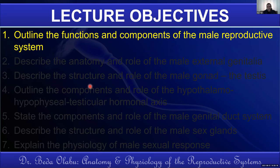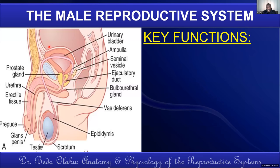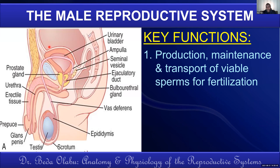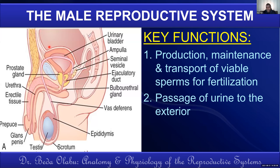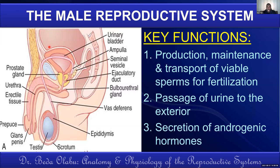Starting with the functions: if someone asks you to state the key functions of the male reproductive system, we talk about the production, maintenance, and transport of viable sperms for fertilization — that's basically the reproductive function. We also talk about passage of urine, likely because the urethra passes through the penis, and production of male sex hormones which we call androgens. These are the key functions of the male reproductive system.